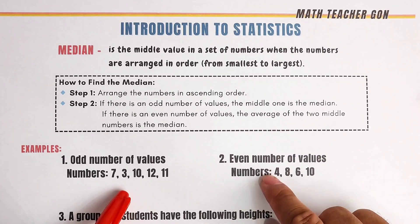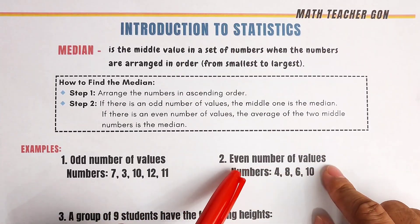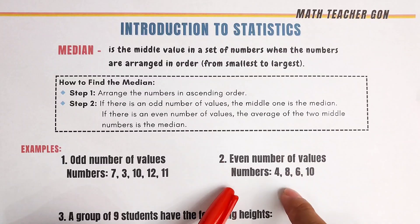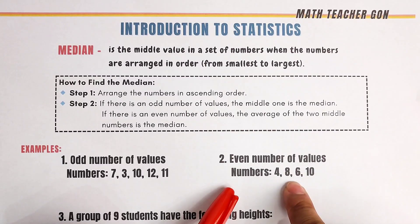And for example number 2, even number of values — let us count: 1, 2, 3, 4. This is an even number.